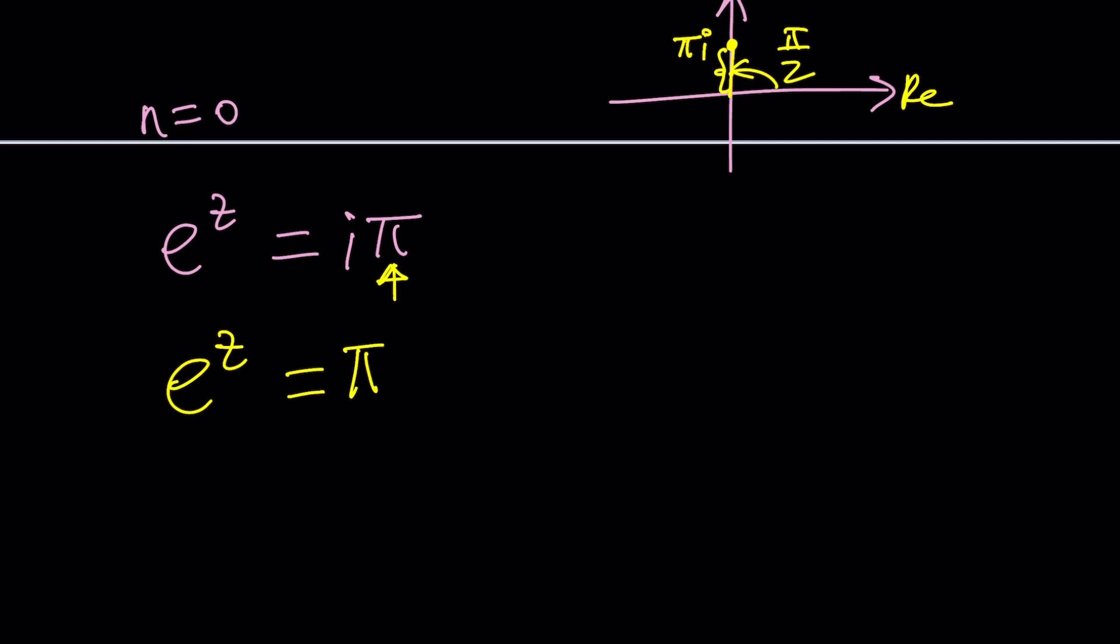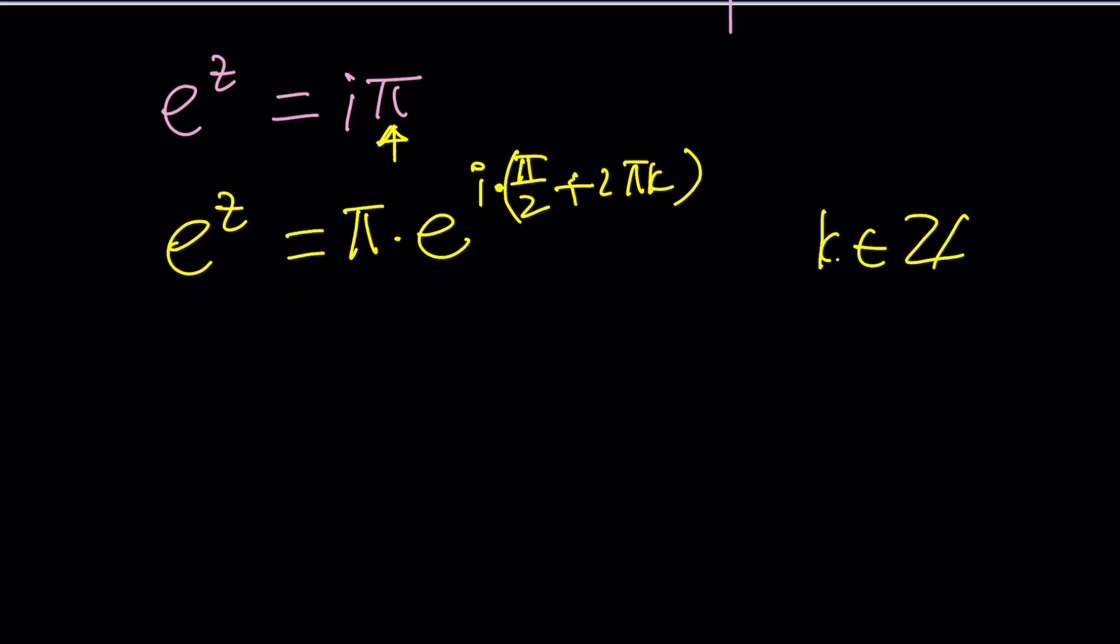It's going to be pi times e to the power i pi over 2. That's where the argument comes in. And again, if you wanted to add 2 pi k, where k is an integer, you can do so. But I'm going to continue with k equals zero. I want to keep things a little simple here. Pi times e to the power i pi over 2. See how simple that is?